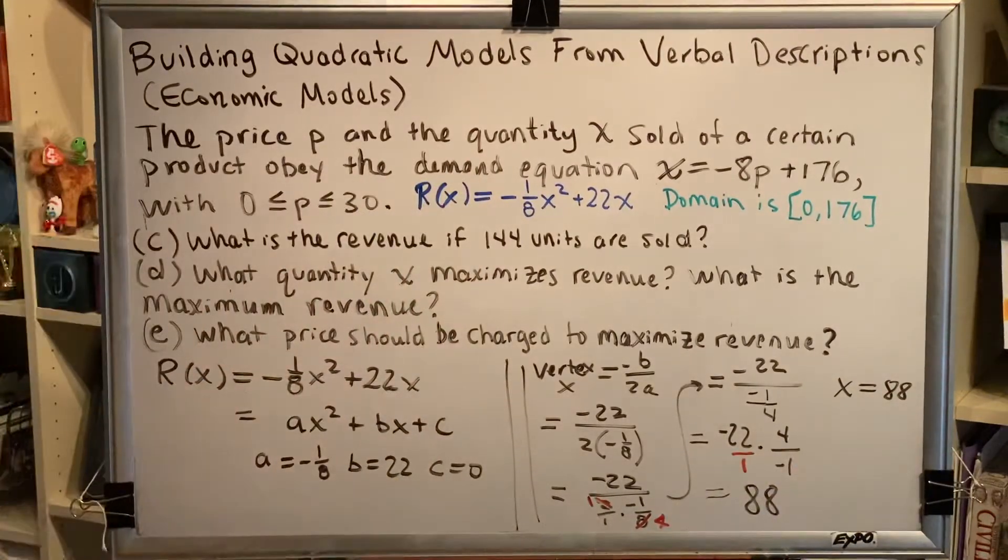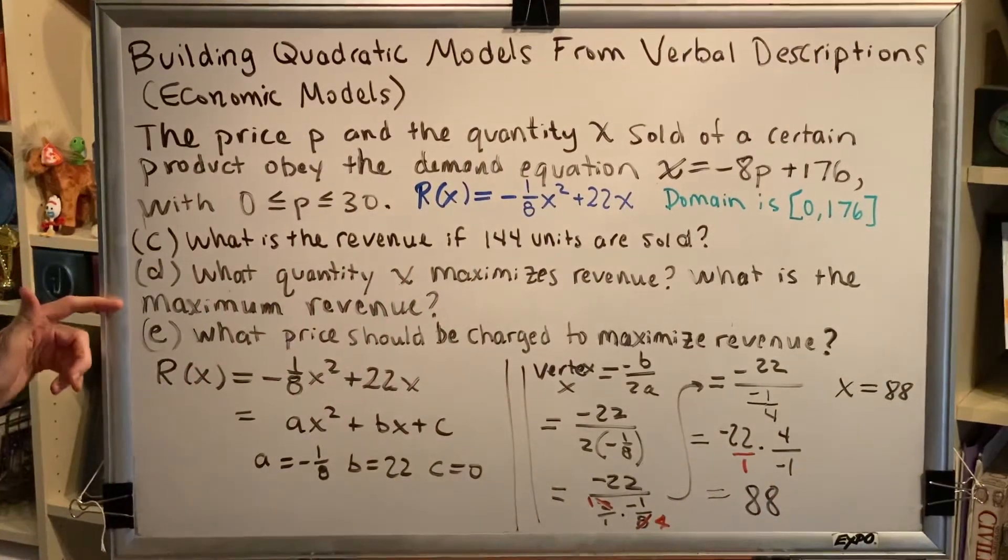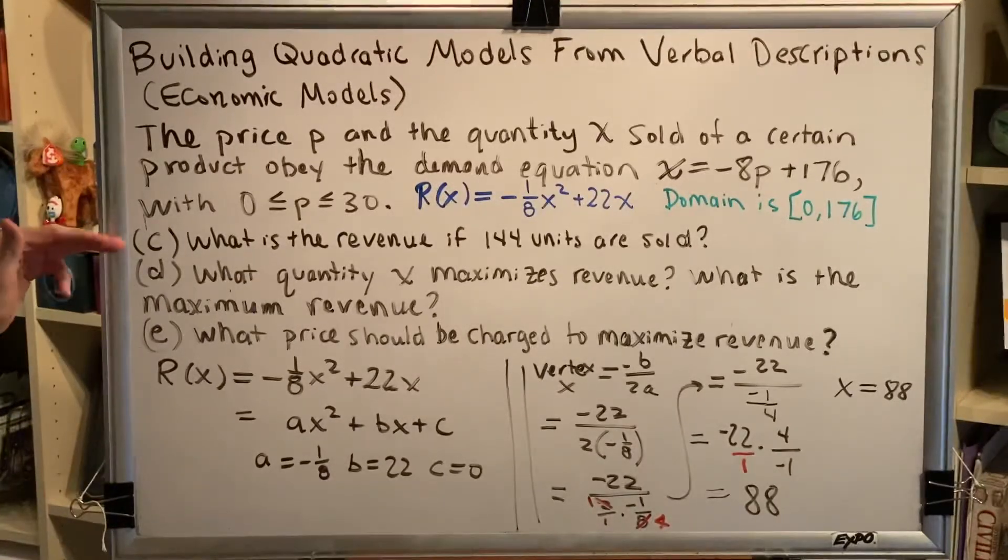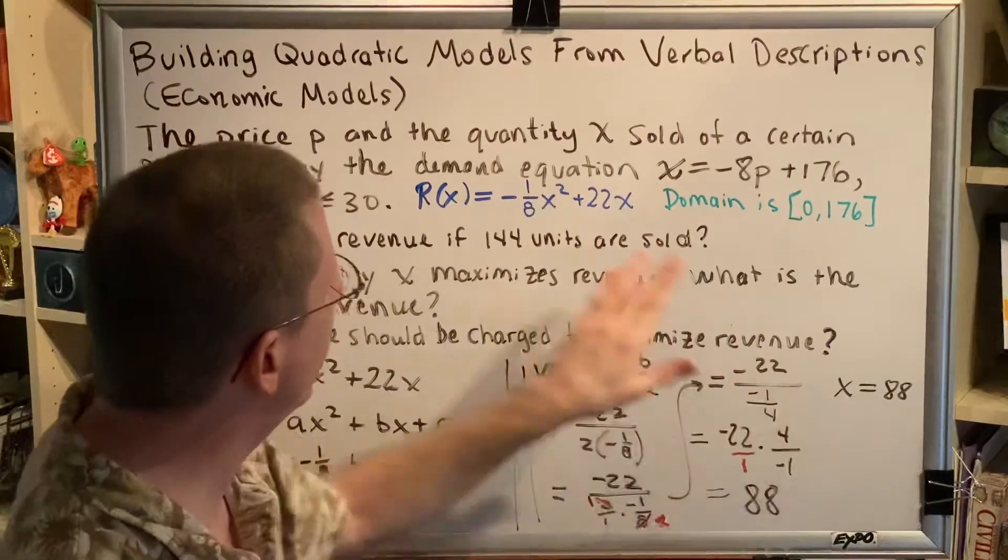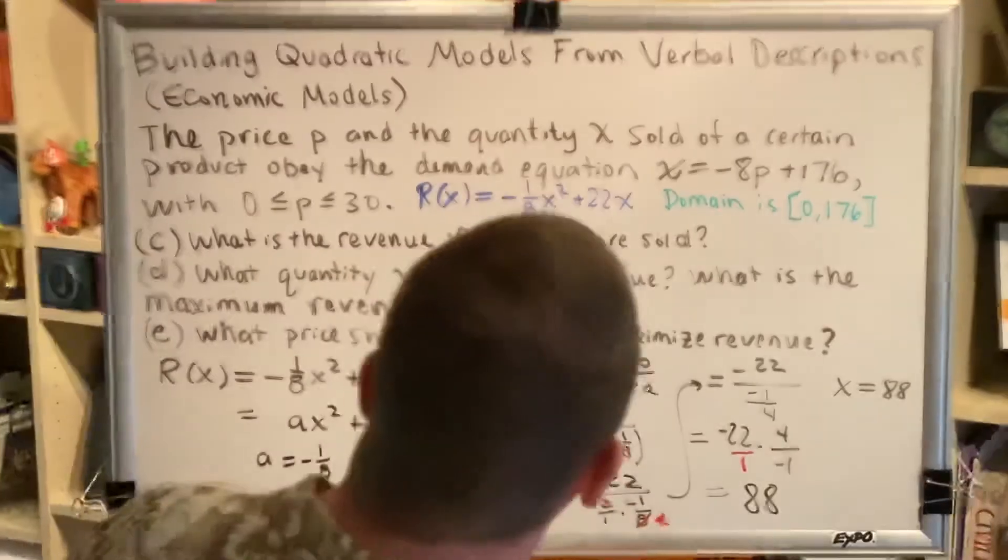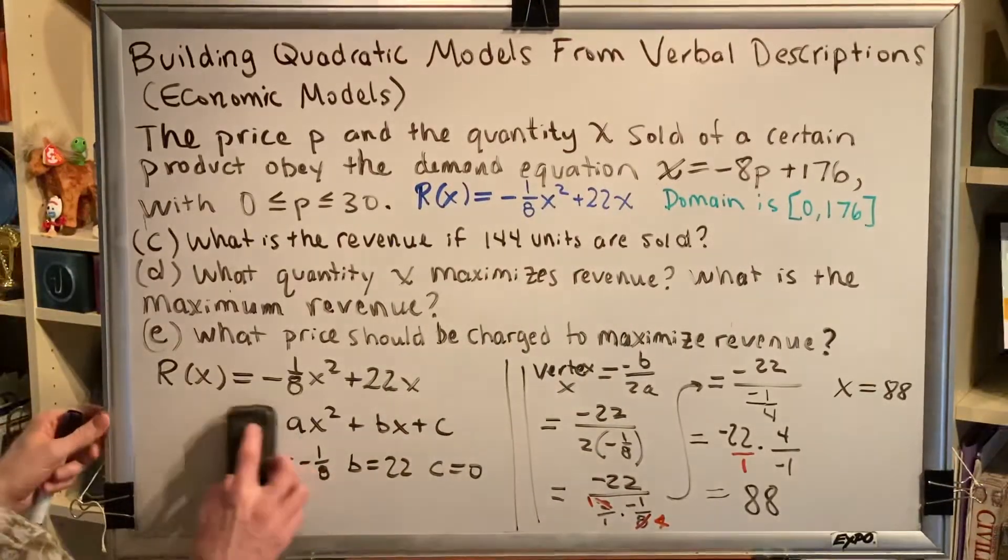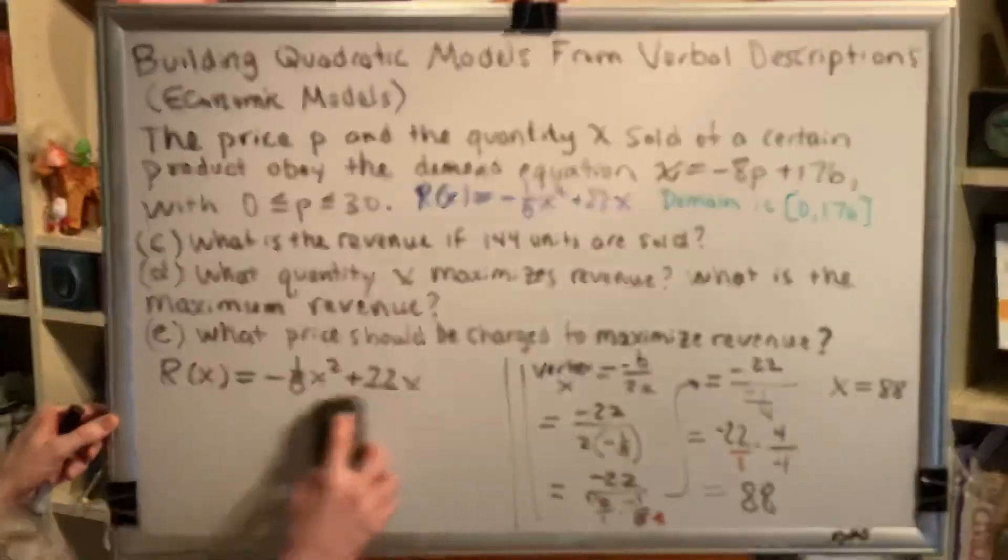As for the second question, what is the maximum revenue? We need to use the same scale that we used in Part C. We now know a value of x. We just have to plug into here to find the corresponding value of y, also known as r of x, also known as the revenue. So,